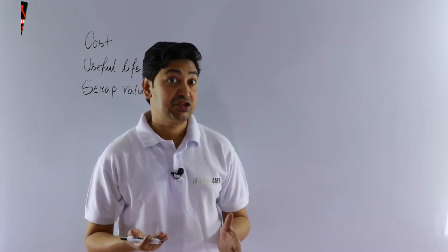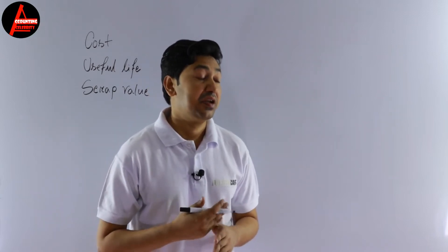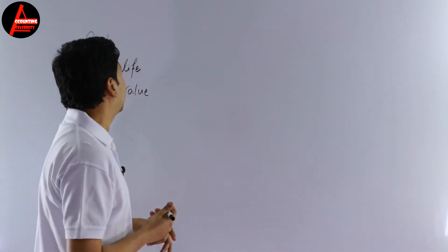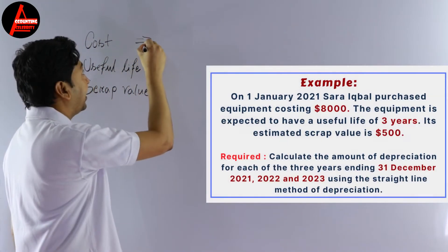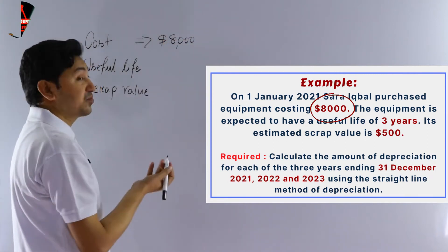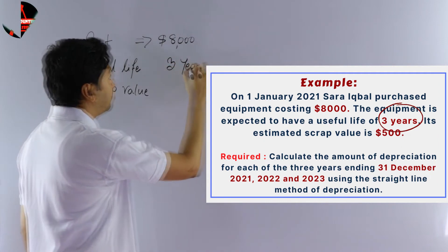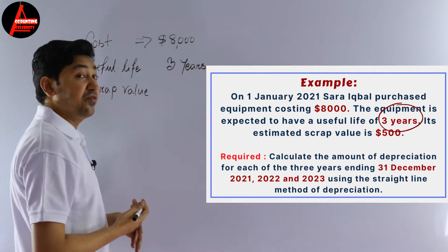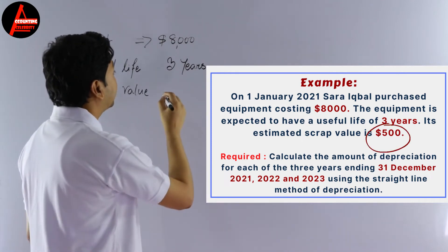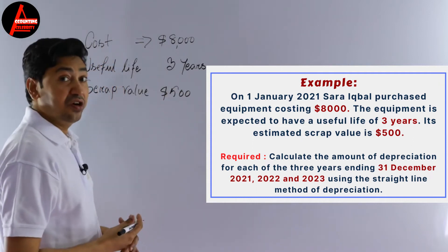It is the straight-line method, so the same amount of depreciation will apply for every year. In this question we already have the cost, which is eight thousand dollars, the useful life, which is three years, and the scrap value — or salvage value — which is five hundred dollars.